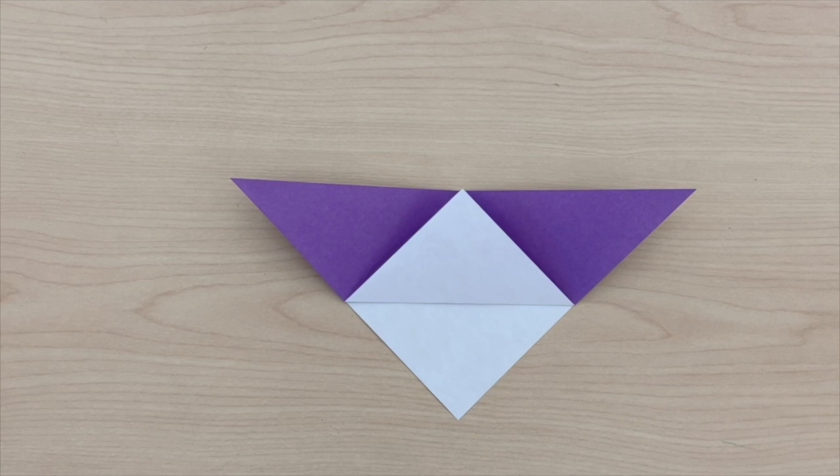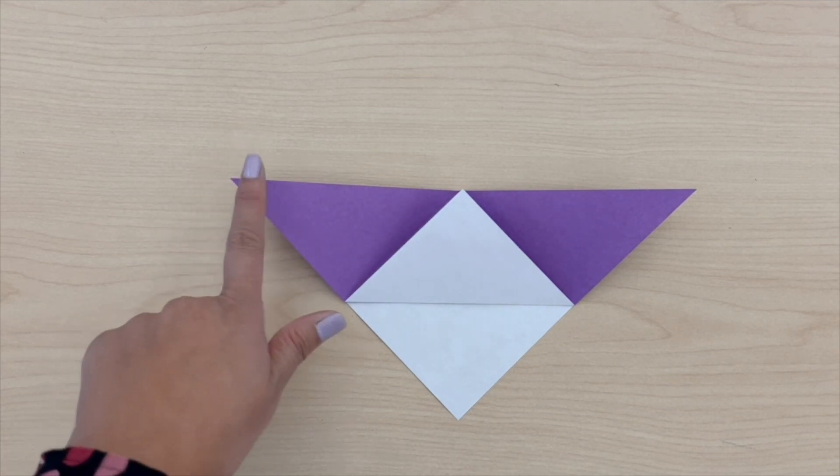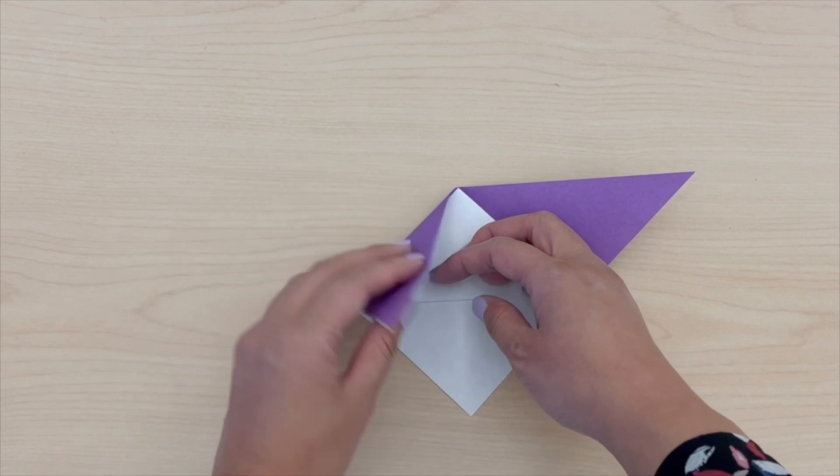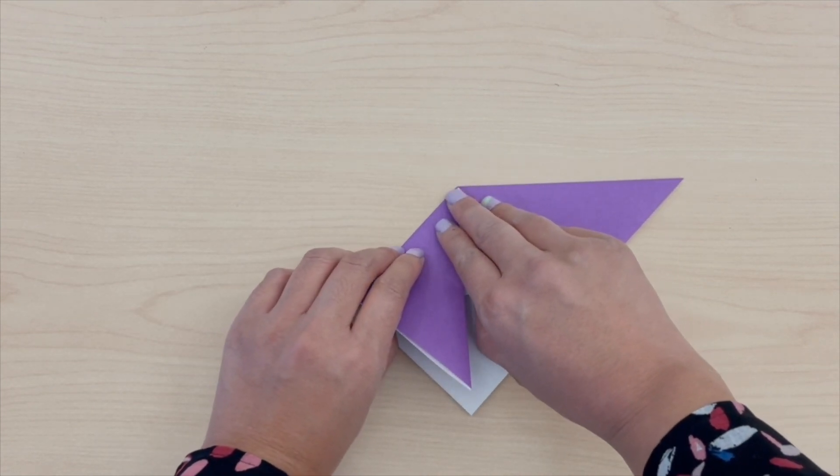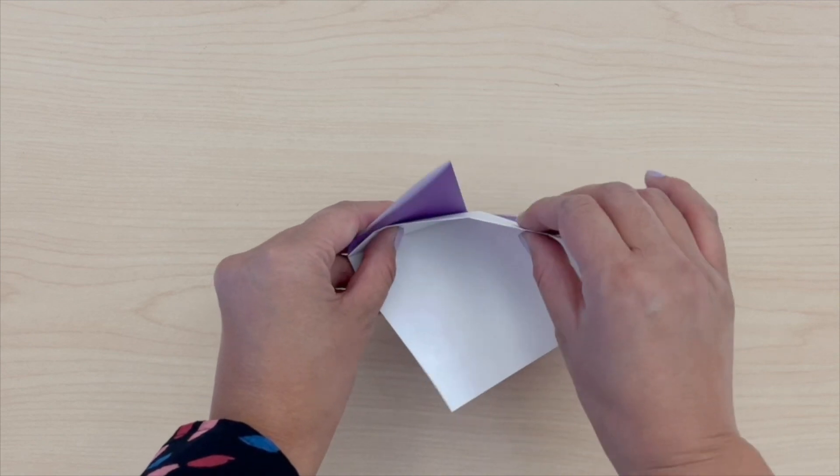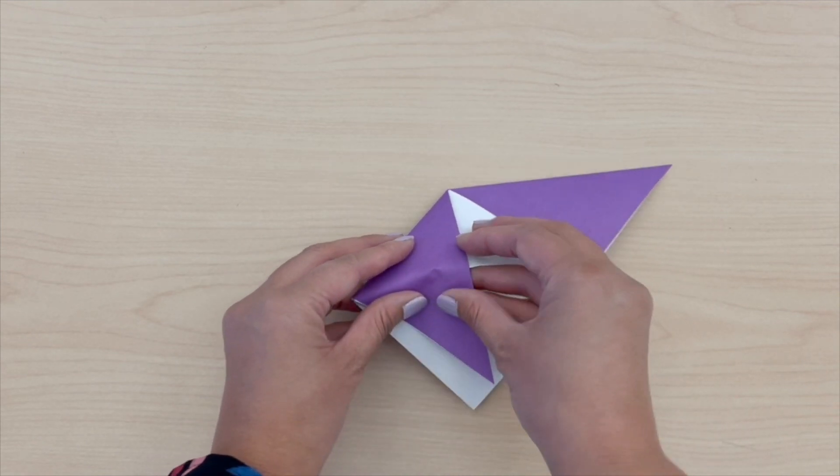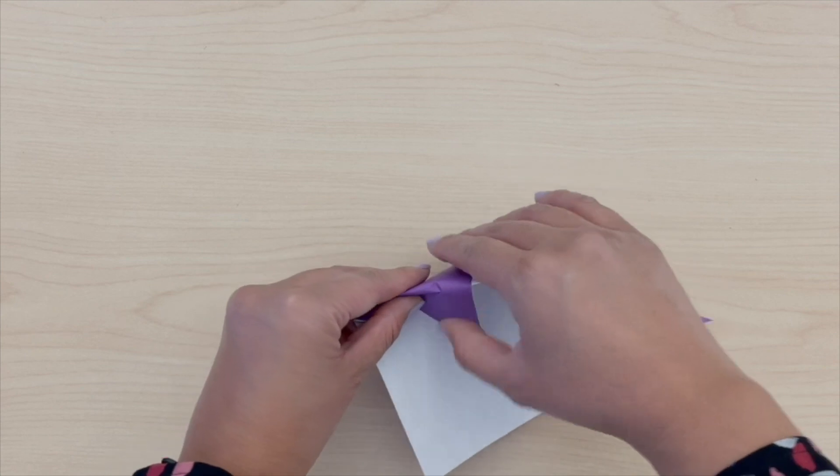Now you are going to fold this point down again. You will notice that there is a little pocket underneath it. You're going to fold and tuck this flap into this pocket.